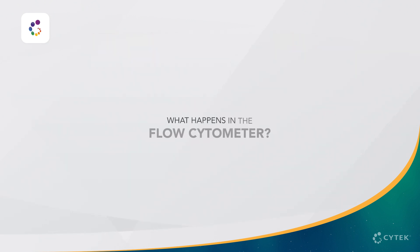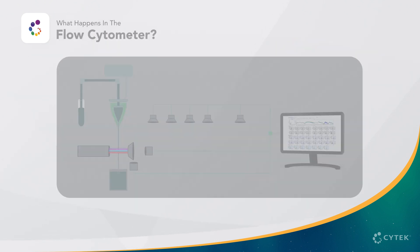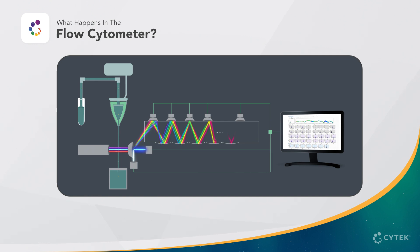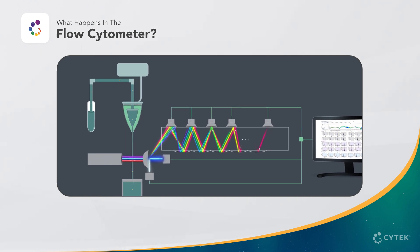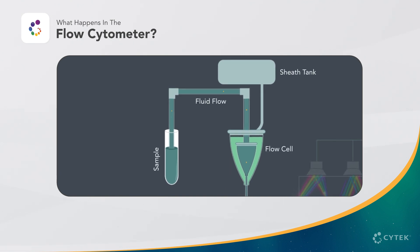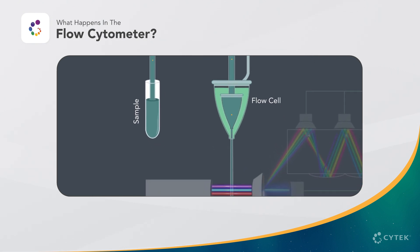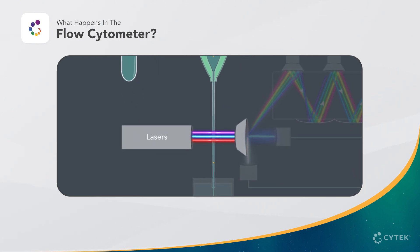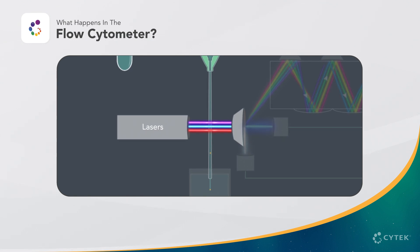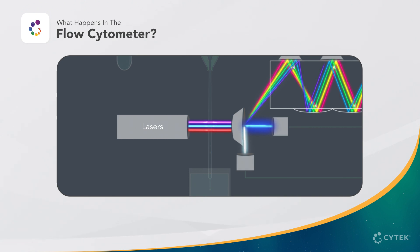What happens in the flow cytometer? Let's trace the path of cells through the various components of the flow cytometer. First, the sample is taken up by the cytometer and enters the fluidic system. The cells are aligned single file in the flow cell, then pass through each of the lasers at the interrogation point. As each cell is interrogated, photons of light are collected from a few sources.